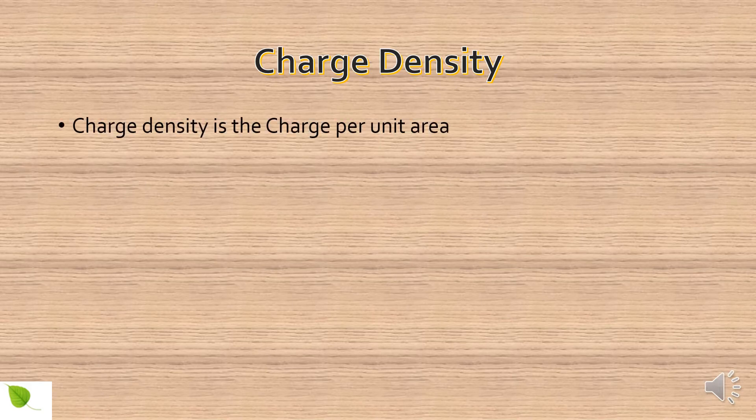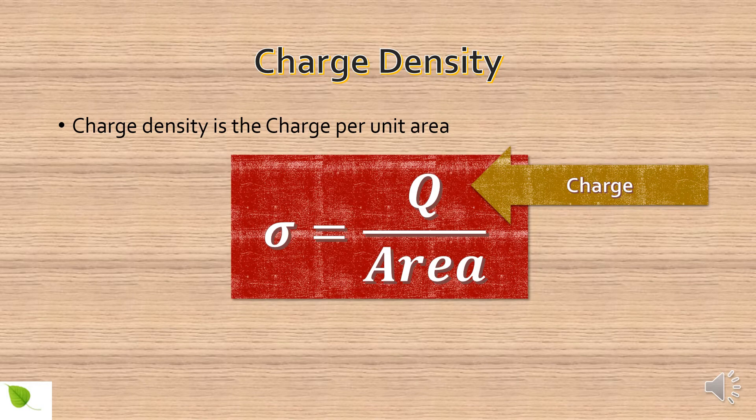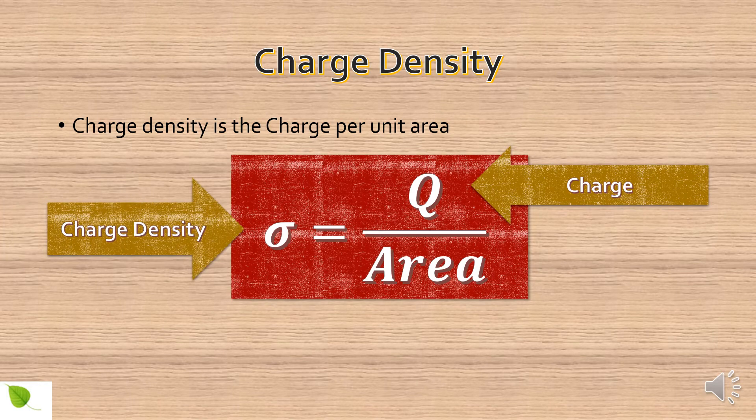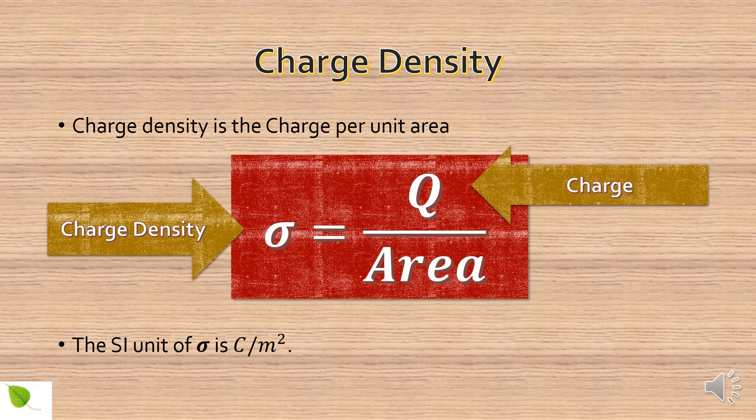Charge density is the charge per unit area, that is Q by area. It is represented by small sigma. The SI unit of charge density is Coulomb per meter square.